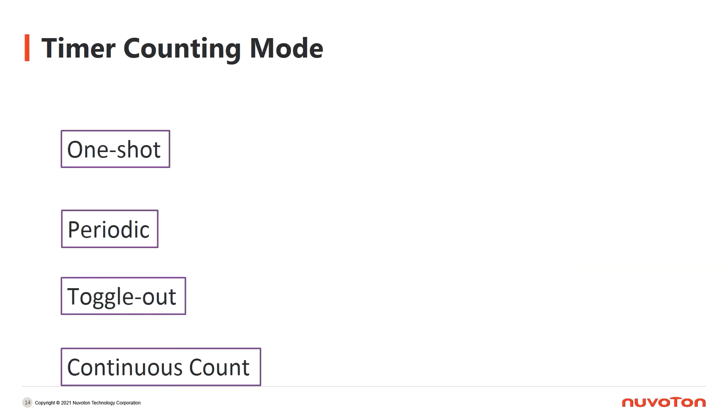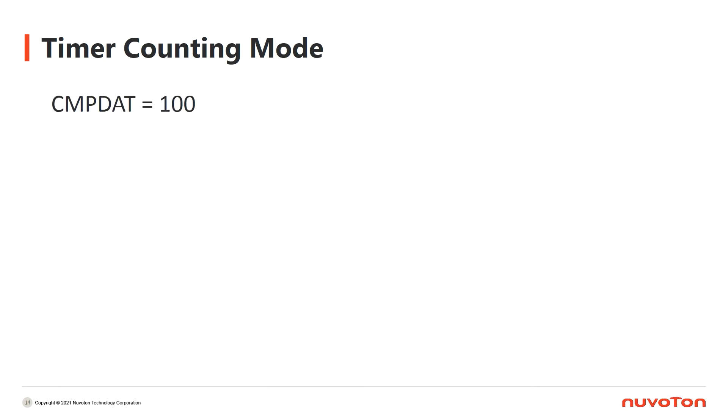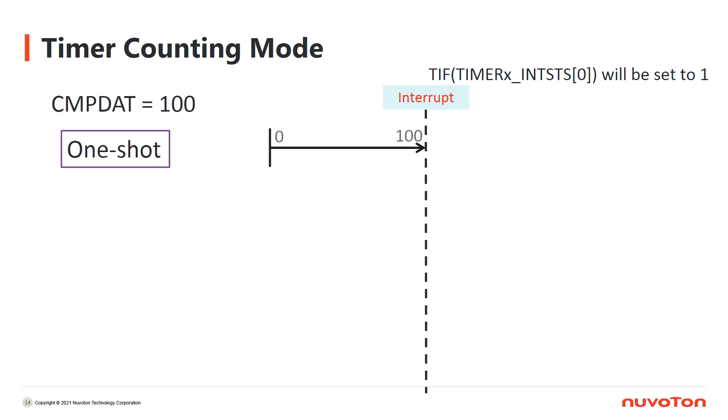When we are using timer counting function, there are four operation modes to choose. They are one shot, periodic, toggle out, and continuous count. Let's take Comparator as 100 to explain these modes. For one shot mode, as the name suggests, when the counter value reaches 100, the timer triggers an interrupt and stops counting. For periodic mode, it is similar with one shot mode. It will trigger an interrupt when the counter value reaches 100 as well. In addition, it will reset the counter and repeat the counting periodically.